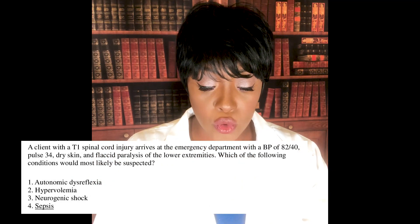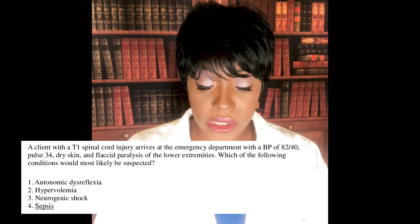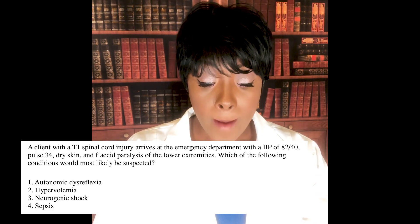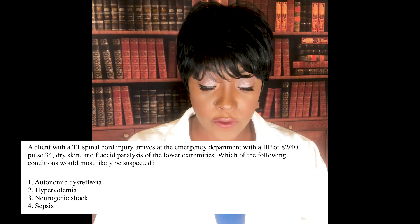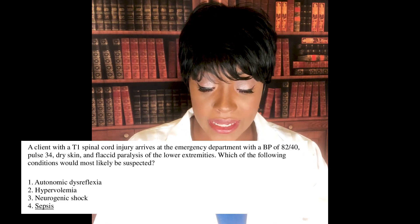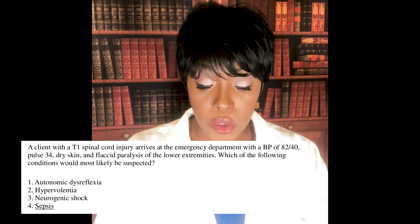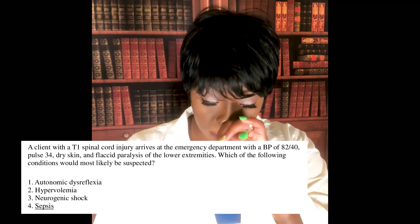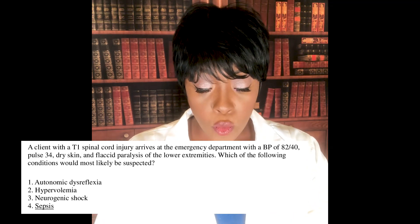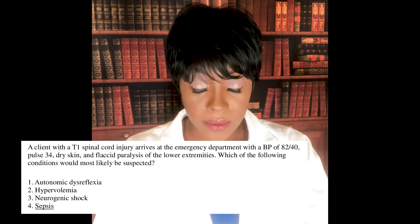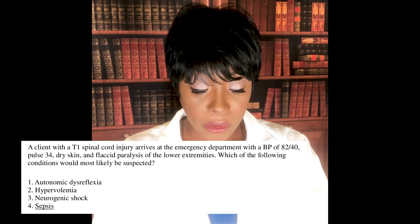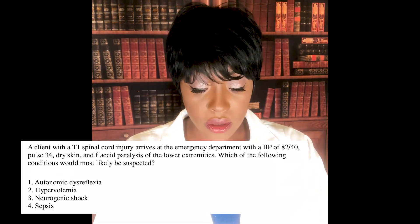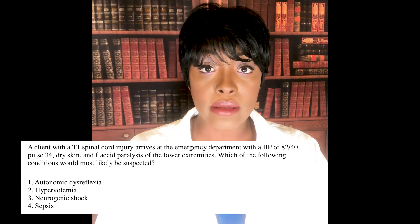A client with a T1 spinal cord injury arrives at the emergency department with a blood pressure of 82 over 40, pulse of 34, dry skin, and flaccid paralysis of the lower extremities. Which of the following conditions would most likely be suspected? One: autonomic dysreflexia. Two: hypervolemia. Three: neurogenic shock. Or four: sepsis.